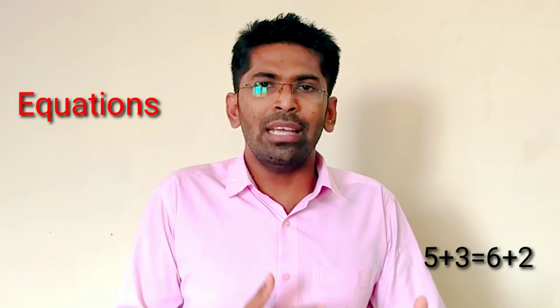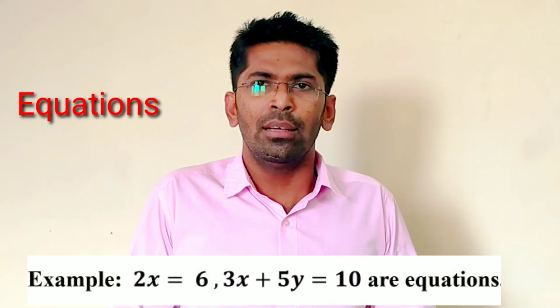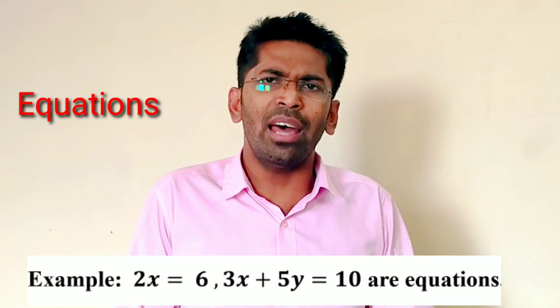For example, the expression 5 plus 3 is equal to 6 plus 2, because they both equal 8. So we can write the equation: 5 plus 3 is equal to 6 plus 2. Some other examples are 2x is equal to 6, and 3x plus 5y is equal to 10.